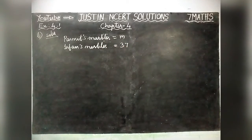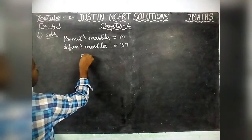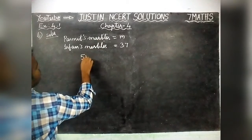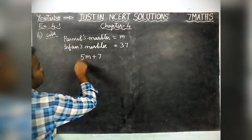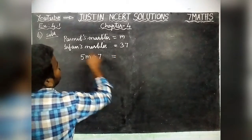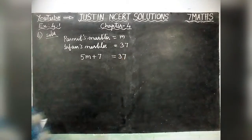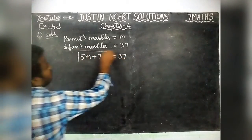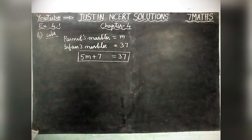Now, they are given 5 times of Permit's marbles, and 7 is extra. So, 5 times of Permit's marbles is 5M, plus 7 marbles — 5 times of Permit's marble — is equal to Irfan's marble. So, Irfan's marble is equal to 37. The required equation is 5M + 7 = 37.